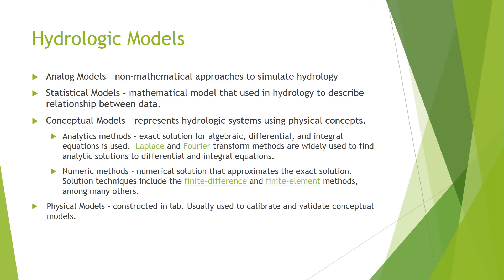Basically there are four types of hydrologic model. The first one is the analog model. Prior to the advent of computer models, hydrologic modeling used analog models to simulate flow and transport systems. Unlike mathematical models that use equations to describe and manage hydrologic systems, analog models use non-mathematical approaches. Two general categories of analog models are common: scale analogs that use a miniaturized version of the physical system, and process analogs that use comparable physics — for example, electricity or heat diffusion — to mimic the system of interest.